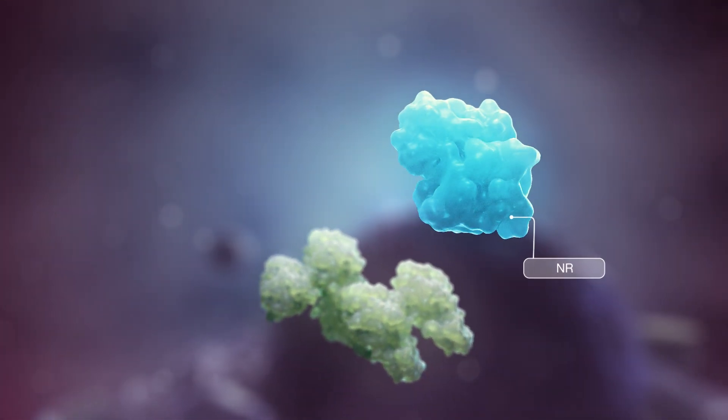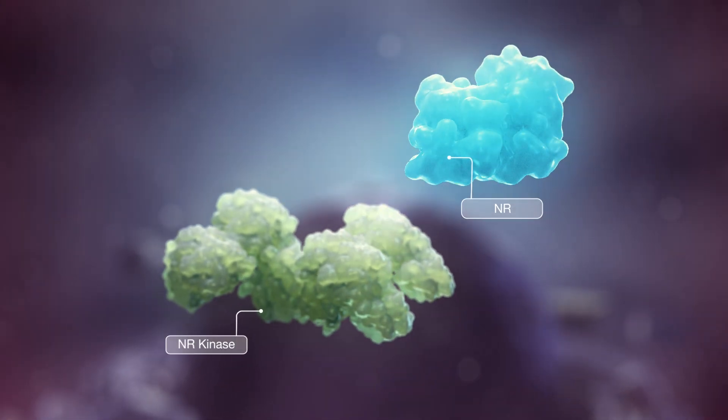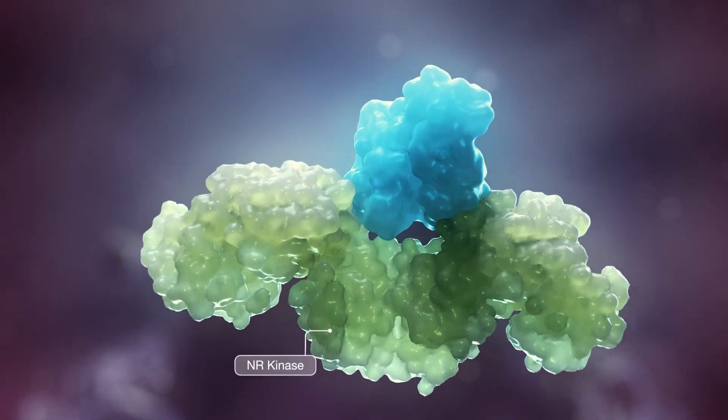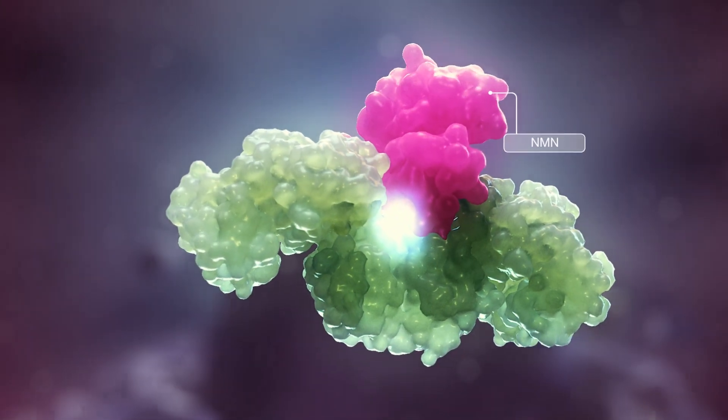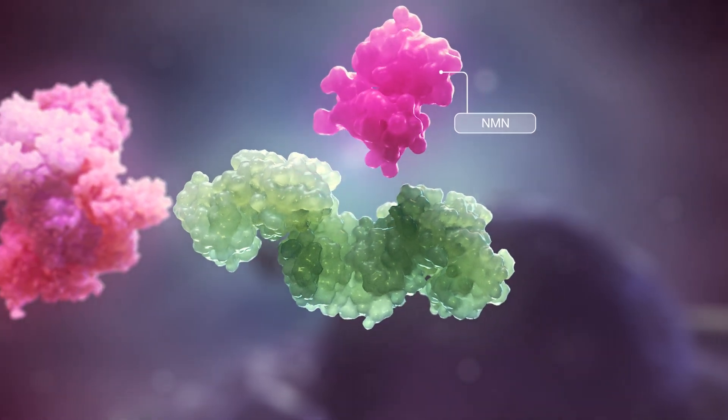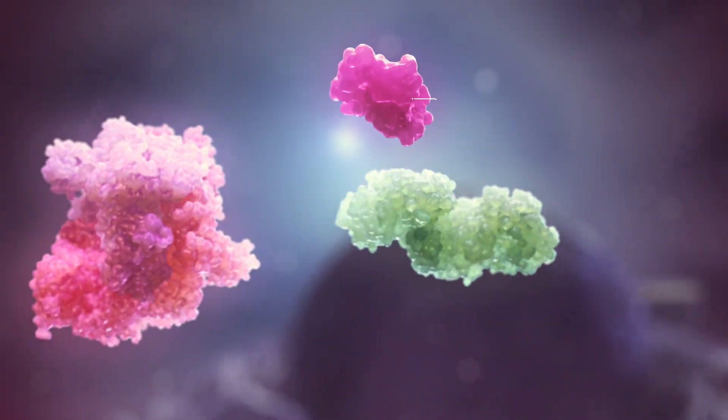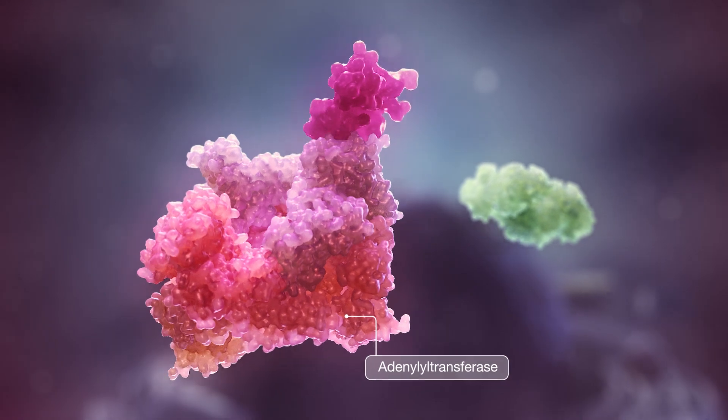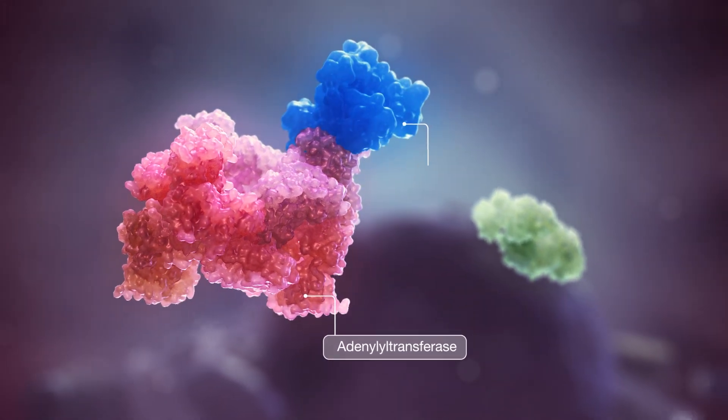After NR enters the cell, an enzyme called NR kinase turns NR into NMN. This is known as the NR kinase pathway. Then another enzyme, NMN adenylyl transferase, converts NMN into NAD.